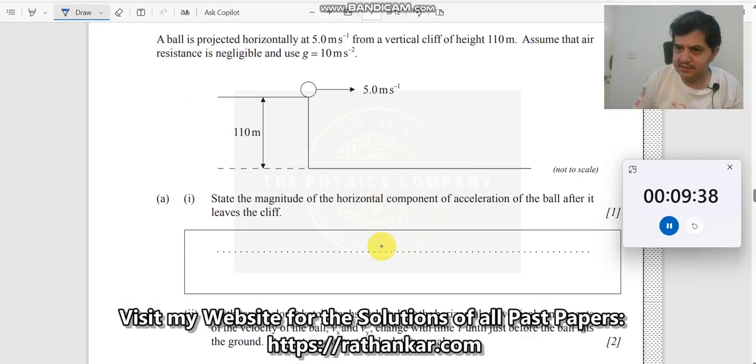This is again a 10 mark problem. Earlier we had 5 marks, so totally it is 15 marks. We divided this into two parts. A ball is projected horizontally at 5 meters per second from a vertical cliff of height 110 meters. Height is given, horizontal velocity is given, assuming air resistance is negligible.